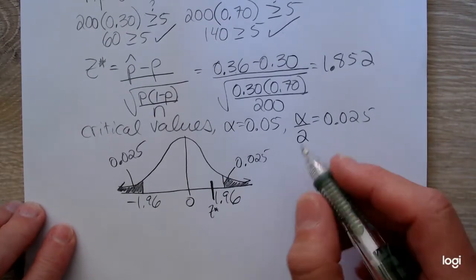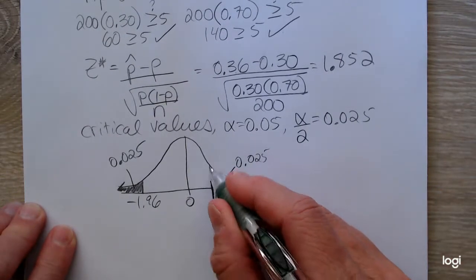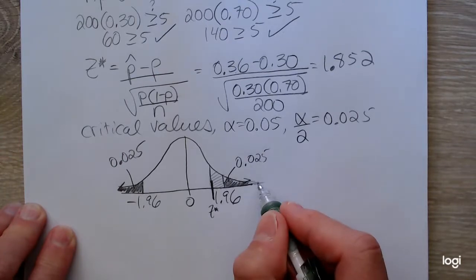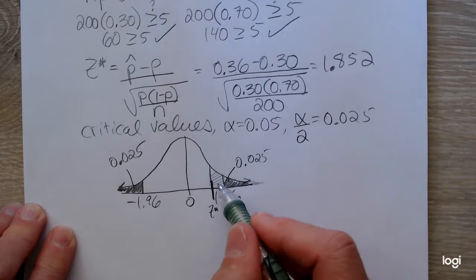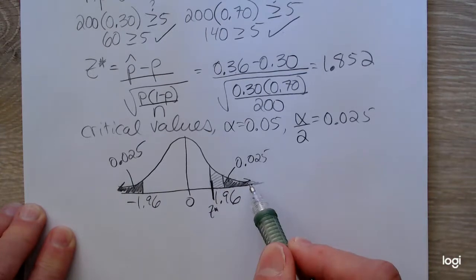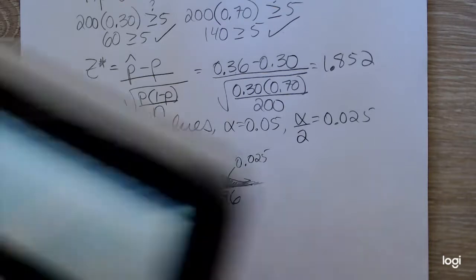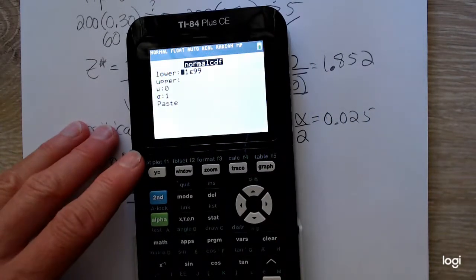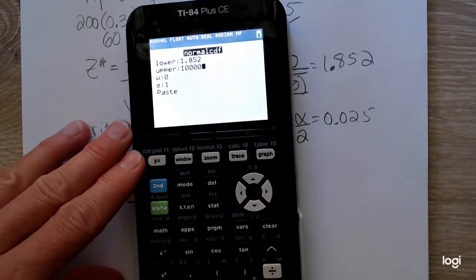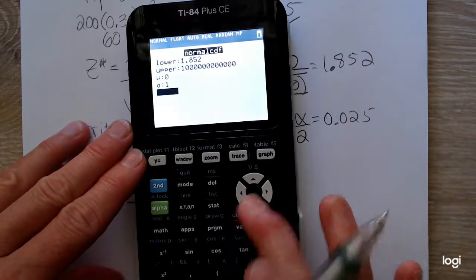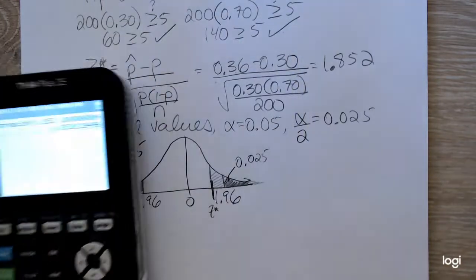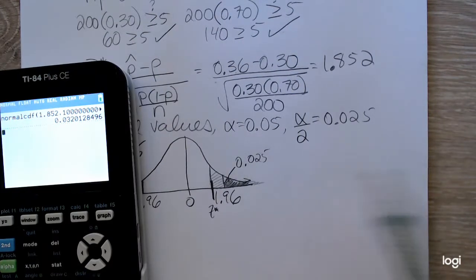To get the p-value, the p-value is going to be double the area further to the right of the standardized test statistic. Because alpha was divided in half, this is going to be half of the p-value. So to get it in terms of alpha for comparison, I need to double this. So you could use your normal CDF function in the calculator. My lower bound is that standardized test statistic. My upper bound is a super large number. So this area is 0.032. But that's not actually the p-value. I need to double that.